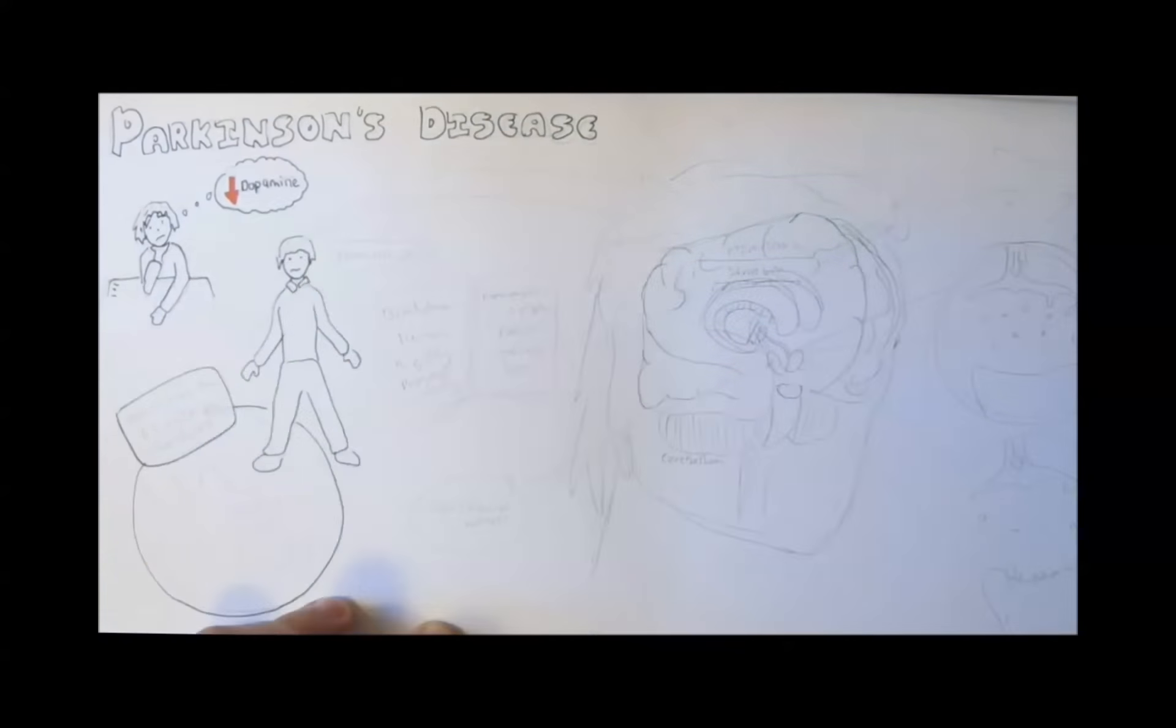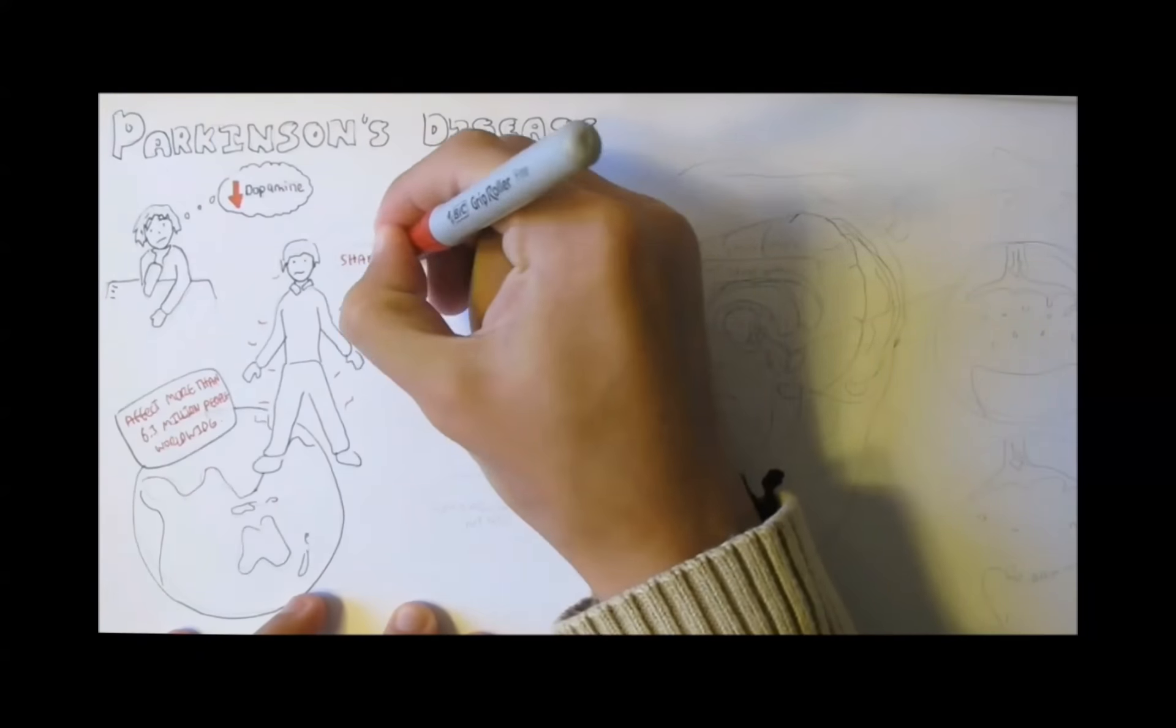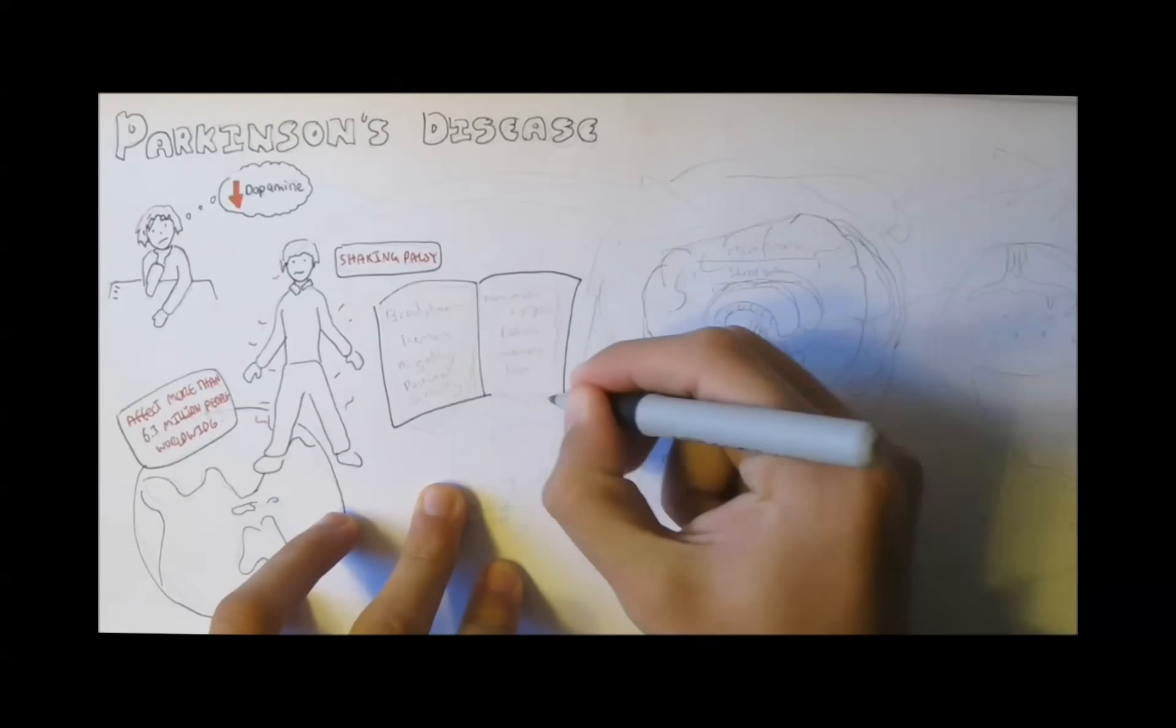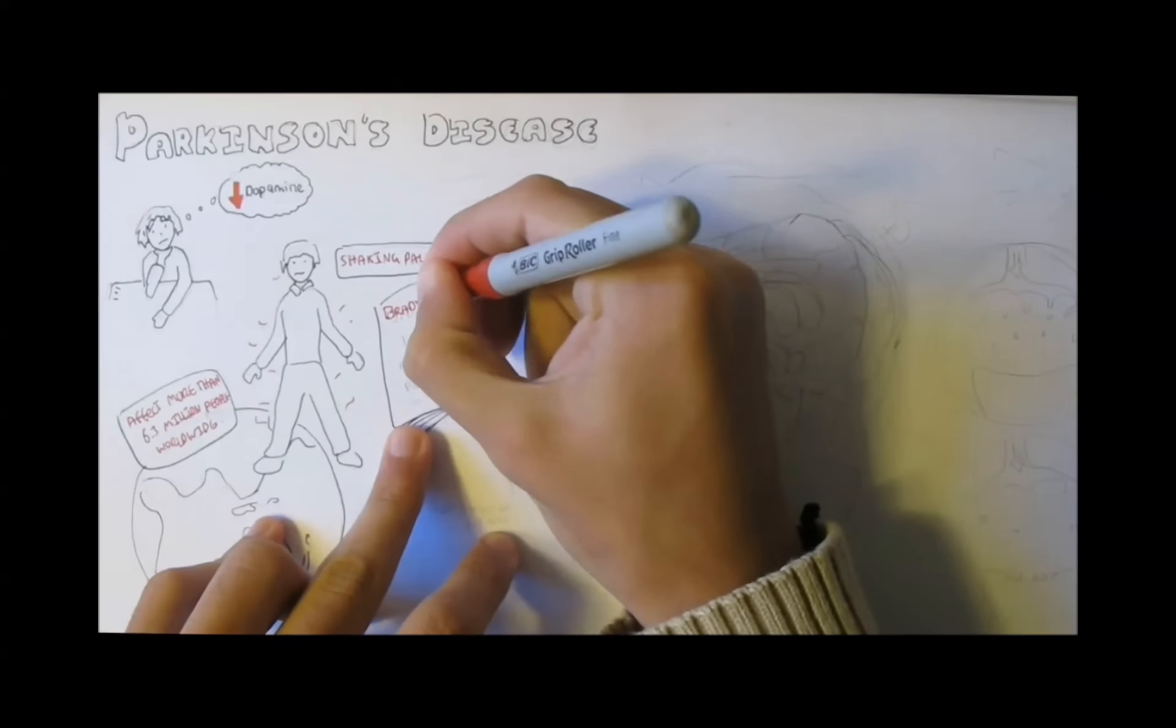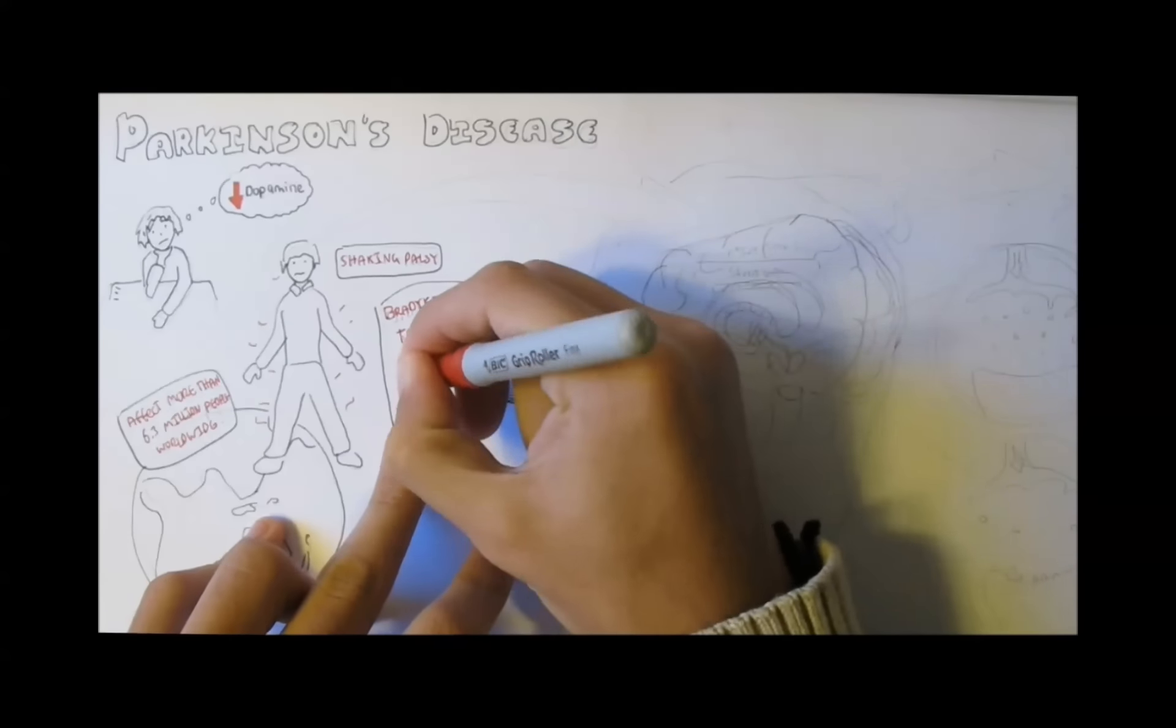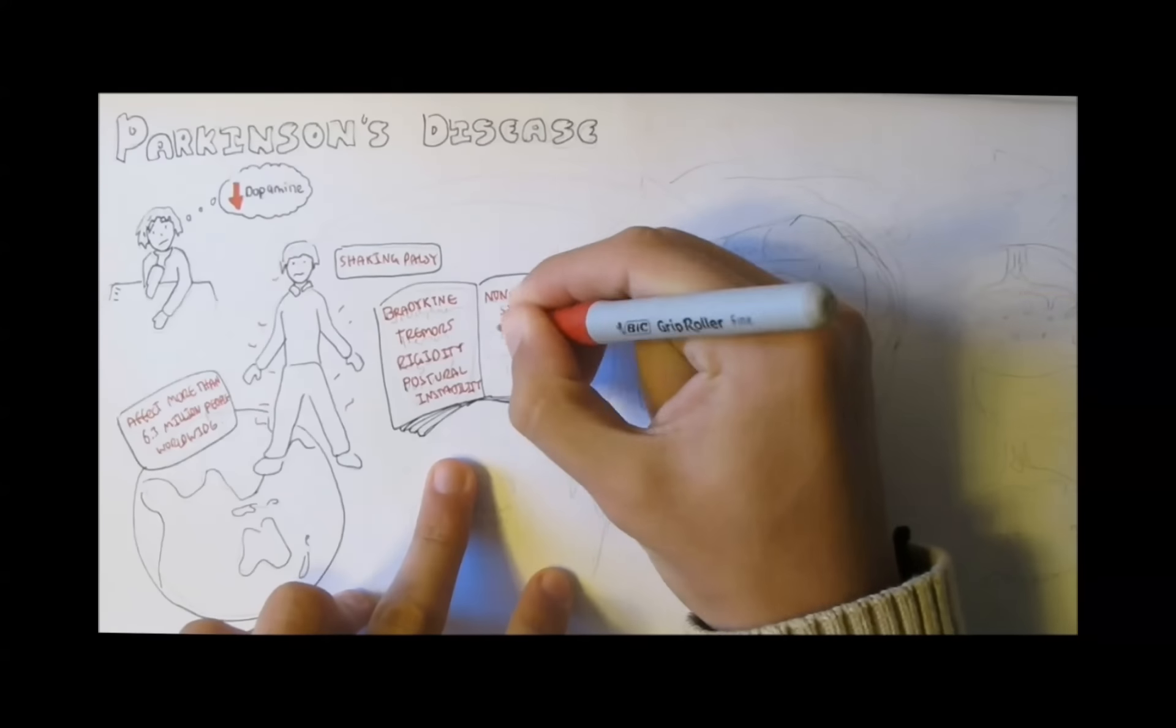Parkinson's is a chronic progressive neurodegenerative disorder affecting more than 6.3 million people worldwide. It is sometimes referred to as shaky palsy because of the symptoms. The main symptoms of Parkinson's are bradykinesia, tremors, rigidity, postural instability, and the non-motor symptoms include fatigue and memory loss.